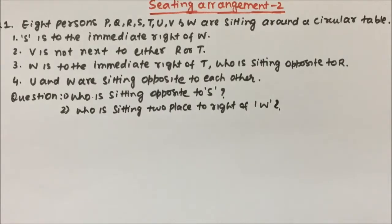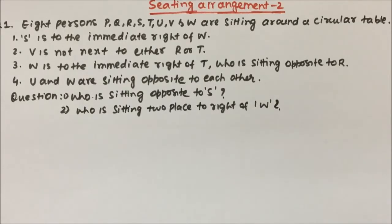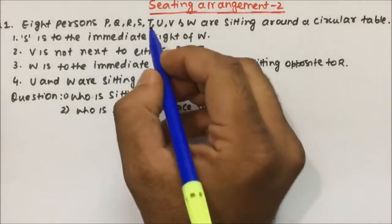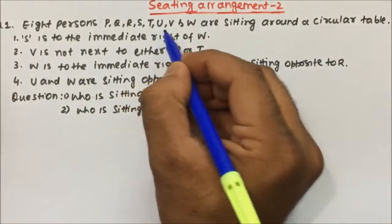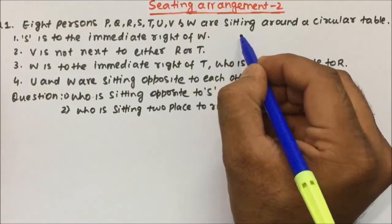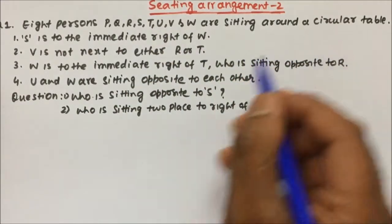Hi friends, our today's topic is seating arrangement and in this video we are going to solve one of the questions based on circular seating arrangement. The question is 8 persons P, Q, R, S, T, U, V and W are sitting around a circular table.